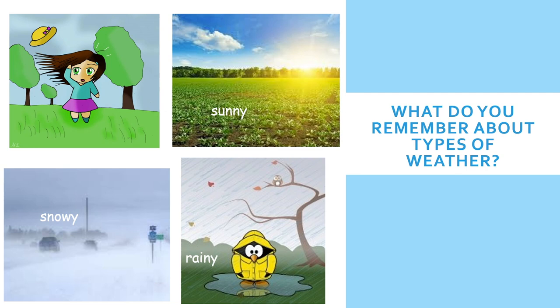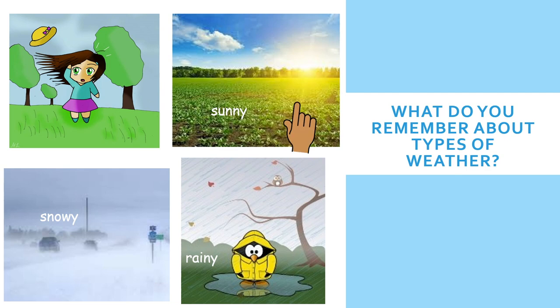Now let's point to the picture that shows snowy. It is snowy outside. I see the snow covering the ground. And I see that it's hard for the cars to drive in the snow. Now let's point to a picture that shows how sunny it is outside. It is so sunny — I think I need my sunglasses.